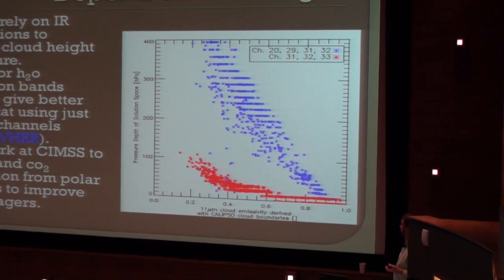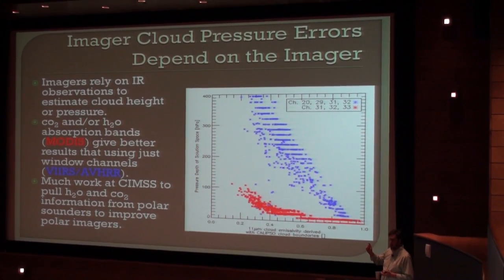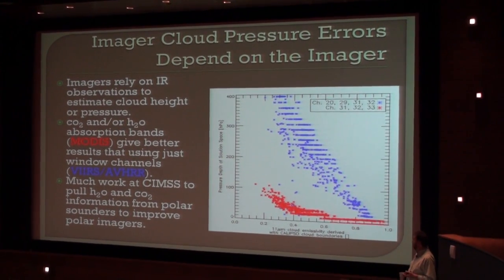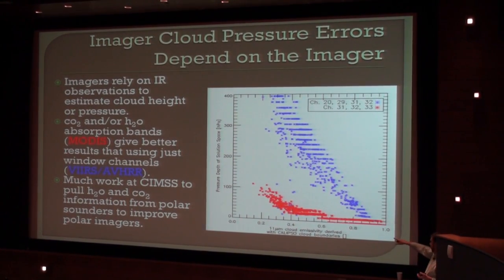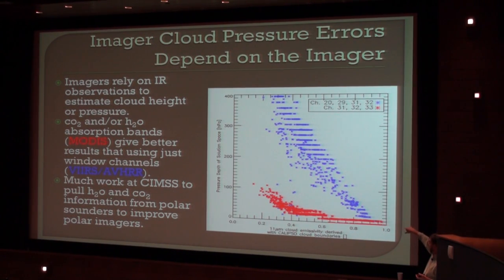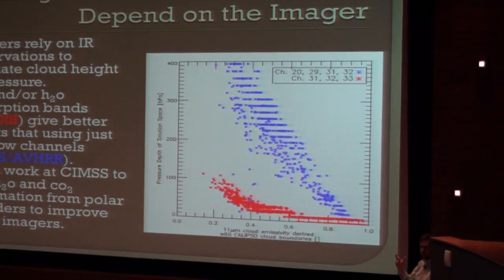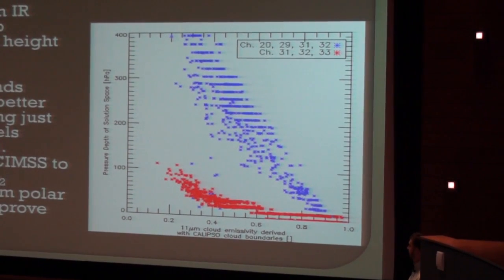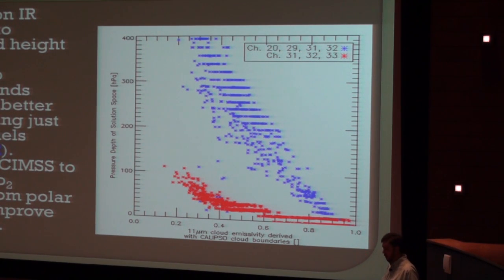You can do a theoretical calculation — on the y-axis is how much slop there is in the cloud height retrieval to still match the observations used for the retrieval. The x-axis is emissivity from one (opaque) to zero (transparent). The VIIRS result has big uncertainty because it uses windowed channels. But if you bring in a CO2 channel — a MODIS or AVHRR-like retrieval — you can see that the solution space really, really narrows quite a bit. Imagers are getting better and better, and there's a lot of work about pulling in CO2 and H2O channels from sounders into the imager for a synergistic way forward.